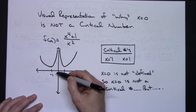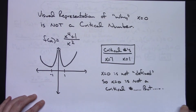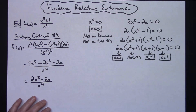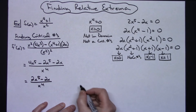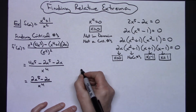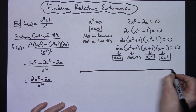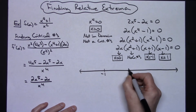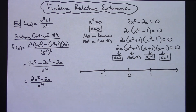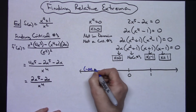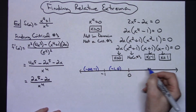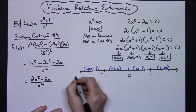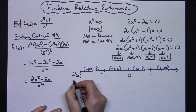Even though x equals zero is not a critical number, when we do the number line test you're going to want to put zero on your number line — not because it's a critical number, but because something important is going on right there. So drawing a number line, we need negative one, zero, and one. Our intervals are: negative infinity to negative one, negative one to zero, zero to one, and one to infinity.